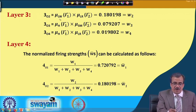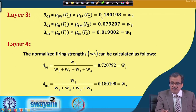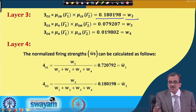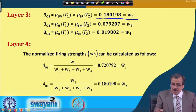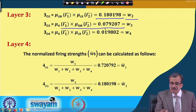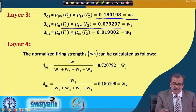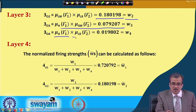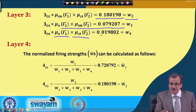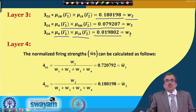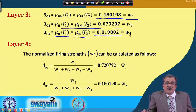For the second rule, the firing strength W2 = 0.180198. Similarly, we can find out the firing strength of the third rule: W3 = 0.079207. For the fourth rule, the firing strength is μ_high(I1*) × μ_large(I2*), and substituting the numerical values, W4 = 0.019802. Once you have determined all the firing strength values, we can start with layer 4.